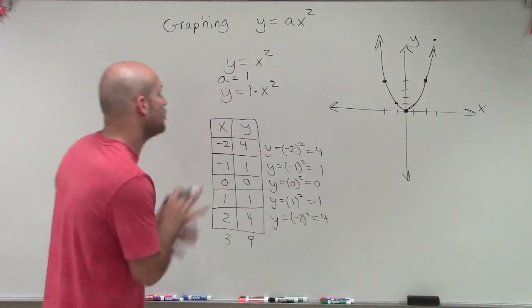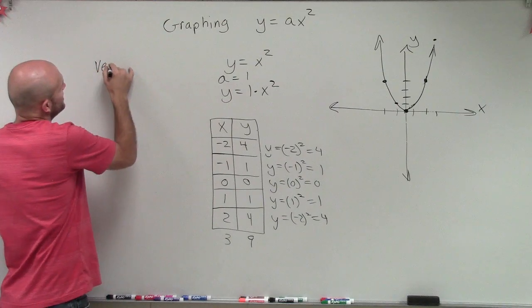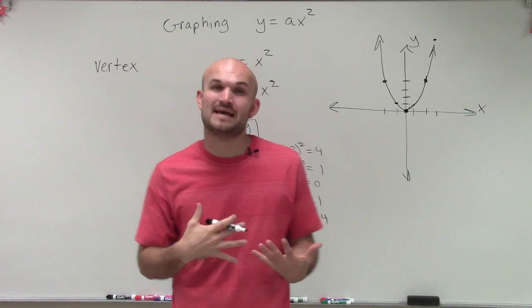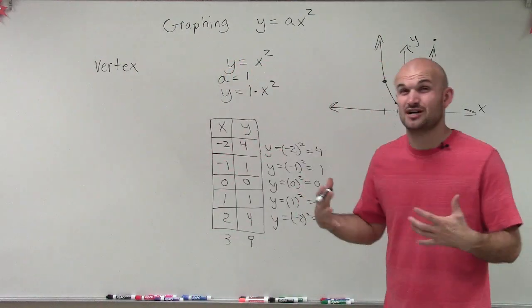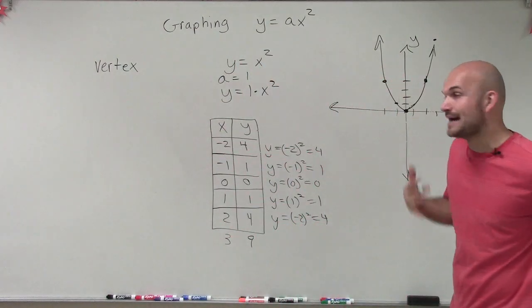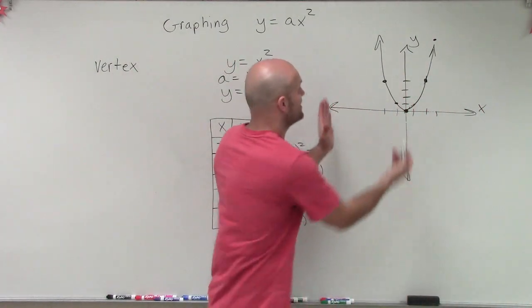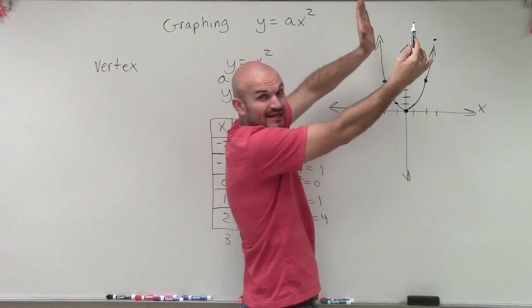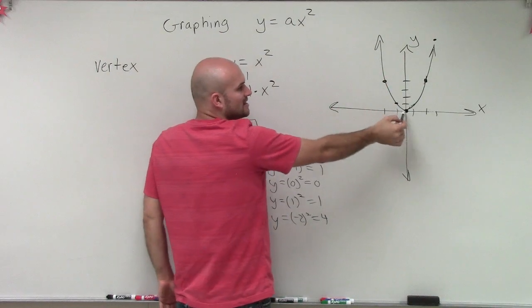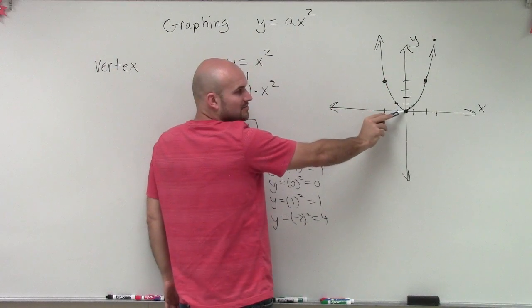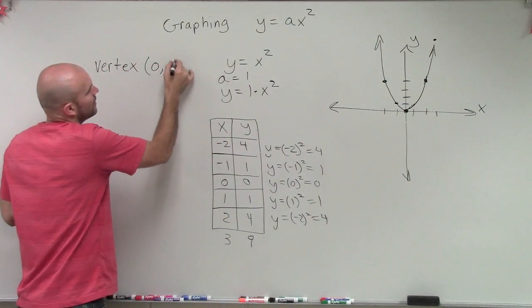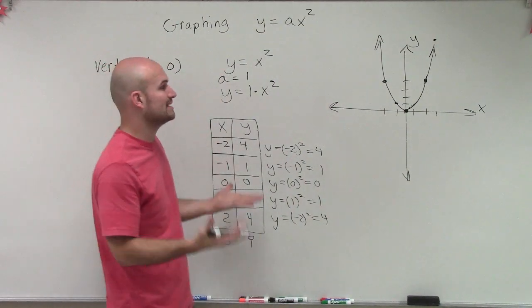Let's talk about the important points of this graph. We've discussed the vertex, which is either the max or the min of the graph — and the vertex is also a point. This graph keeps going up to infinity, so it doesn't have a maximum, but it does have a minimum point. Following along the points, the minimum is right here, and the graph keeps going up from there. So the vertex is the point where the minimum occurs, which is at 0, 0.